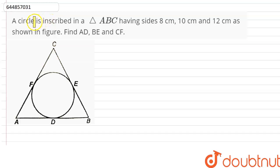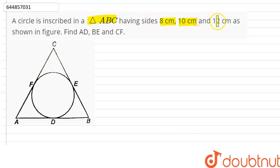Hello. Our question is: a circle is inscribed in triangle ABC having sides 8cm, 10cm, and 12cm as shown in the figure. Find AD, BE and CF.